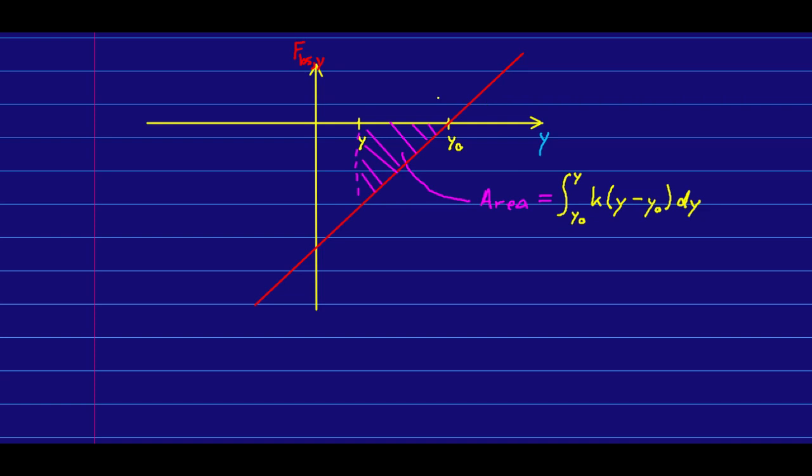However, if you don't know calculus, I hope you're looking at this and saying, well, it's a triangle, and I know how to get the area of a triangle—it's half the base times the height. The base is right here, and it's just y₀ - y, where I've done it that way so it comes out positive.